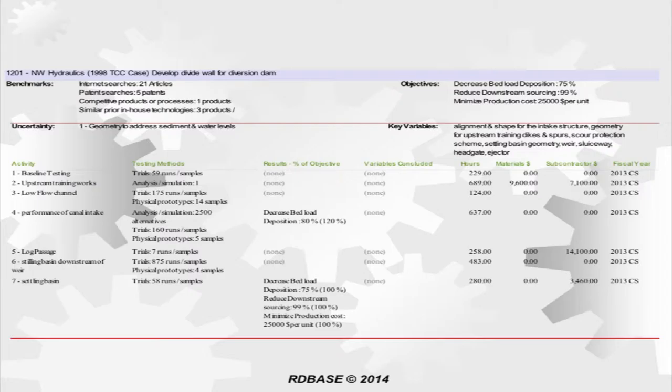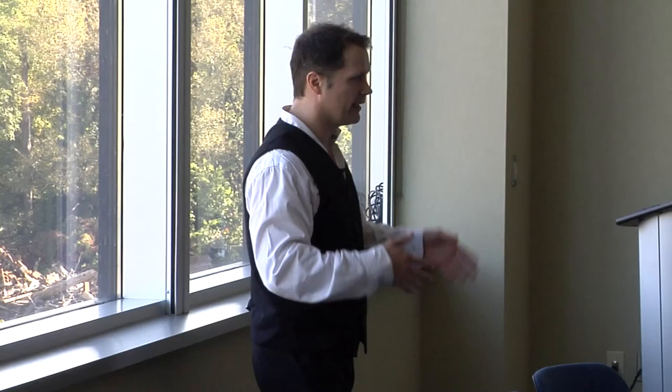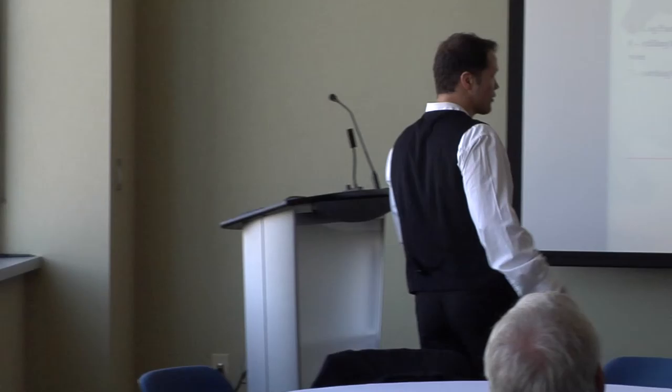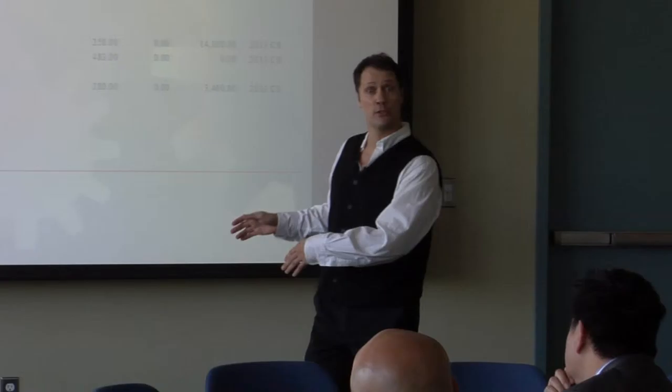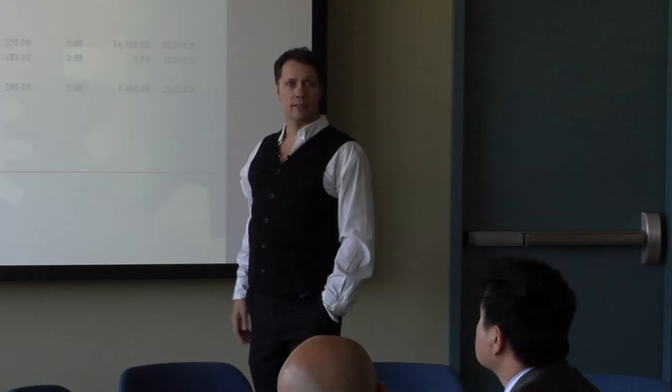I use a key criteria summary so I can quickly assess a project without reading a five-page description. The first thing I check: if the benchmark section is blank, we have a problem. I don't care what field you're in — a blank benchmark section means we haven't adequately benchmarked standard practice. So you might cite 21 articles, five patents, one competitive product. I'll look at total cost and hours to assess whether that's reasonable.